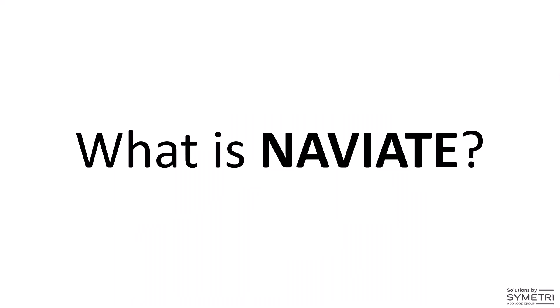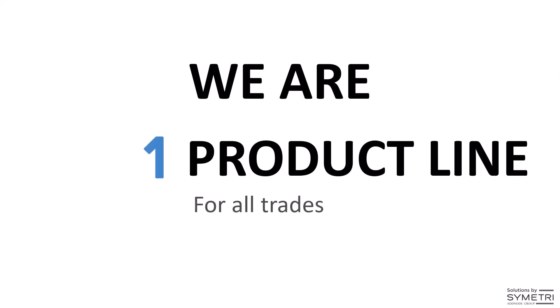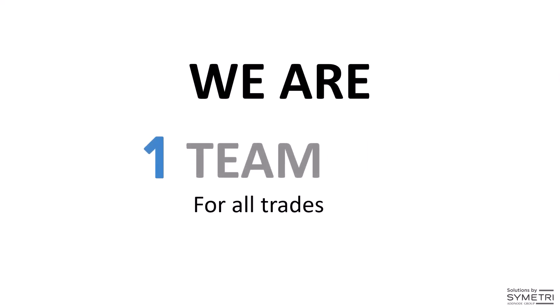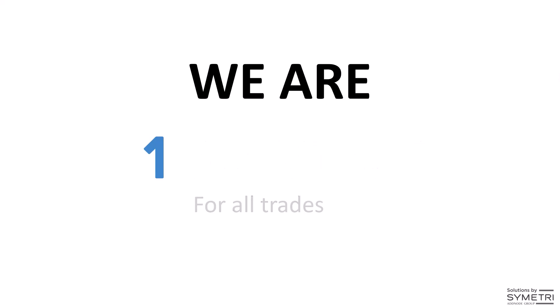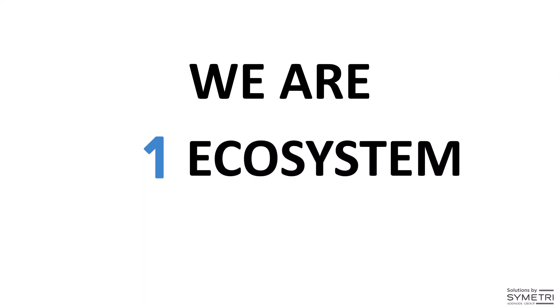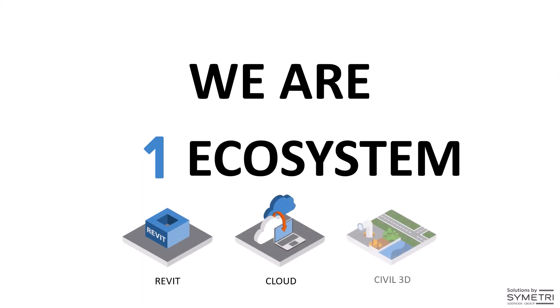Naviate is a technology ecosystem which enables architects and engineers to focus on valuable work, fully integrated within Autodesk Revit and the Autodesk Construction Cloud. The platform maximizes productivity and reduces risk through the cultivation of knowledge, workflow optimization, and connected business workflows. We are one product line for all trades, one team you can work with, one solution to streamline your workflows, one ecosystem for your Autodesk products. Naviate has products for Revit, BIM 360, ACC, and Civil 3D as well.